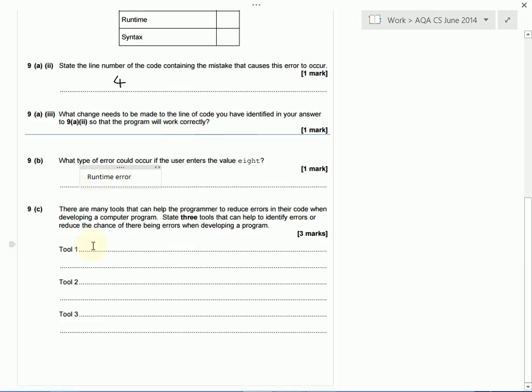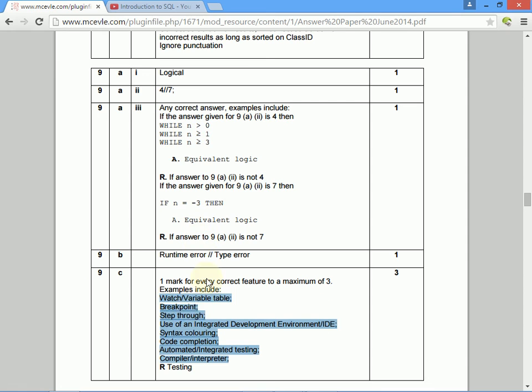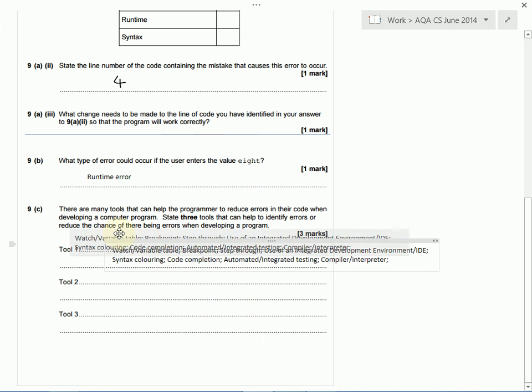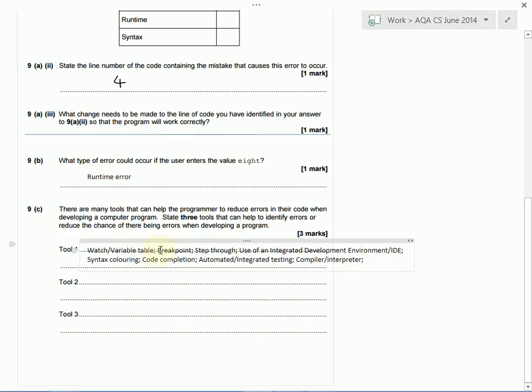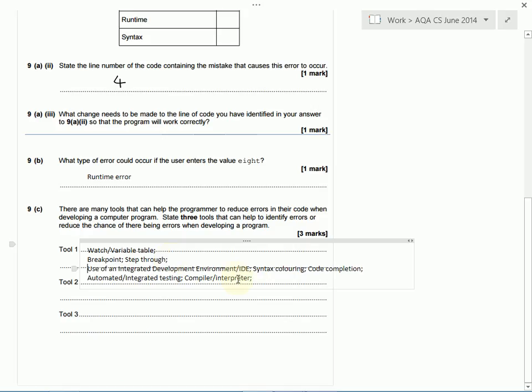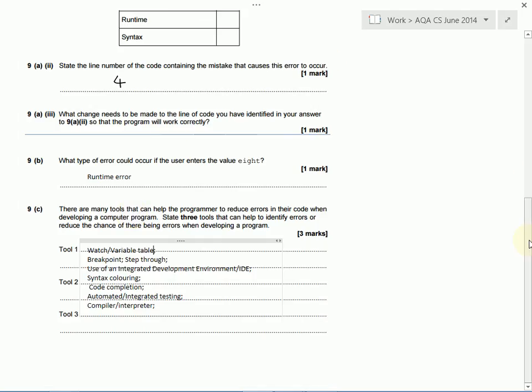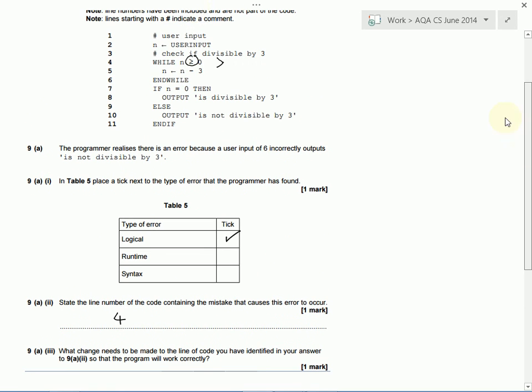Then we've got to write down three tools, so one mark for each, that could help the programmer reduce the number of errors that occur when they're writing their program code. So first of all, you could say a watch or a variable table. Now that means as you're running your code, you'd be able to see what, in our case, n is at any point. So you could watch and keep track of the contents of any variables.